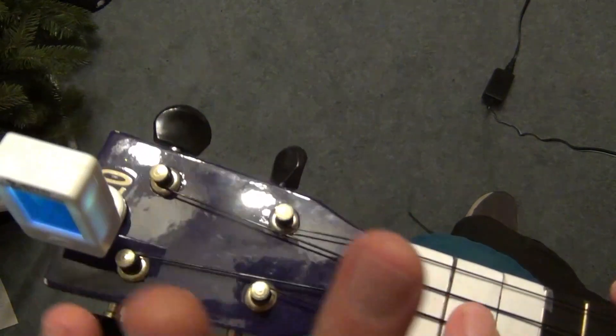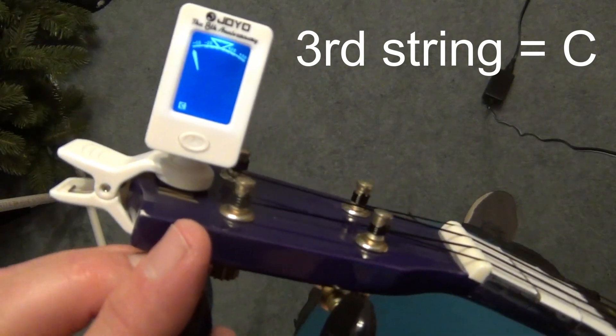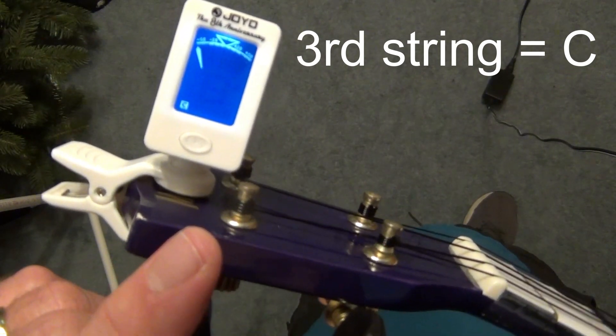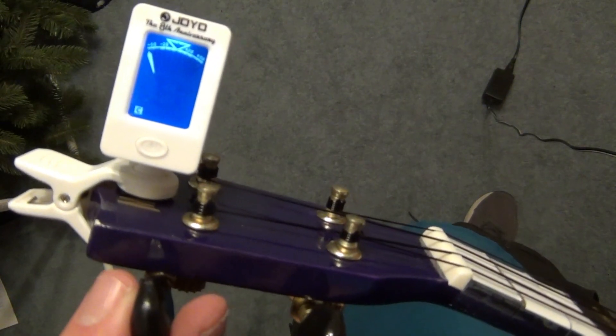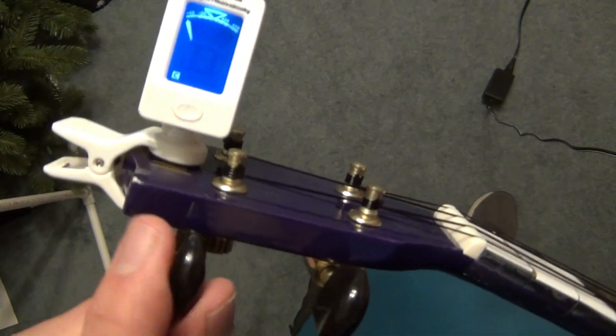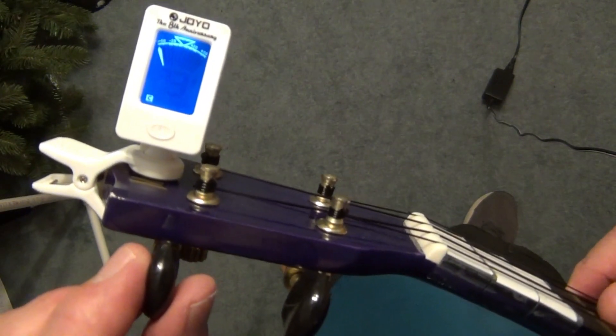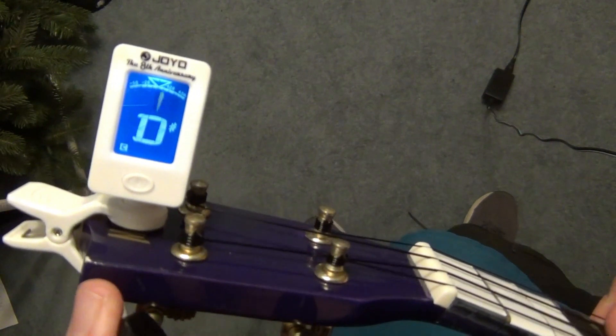Go to the third string. Follow it up to the right tuning key and this is a C note. Pluck the string and it says E. That means I'm sharp so I have to loosen the string. This time I'm going to turn the tuner clockwise to loosen the string.